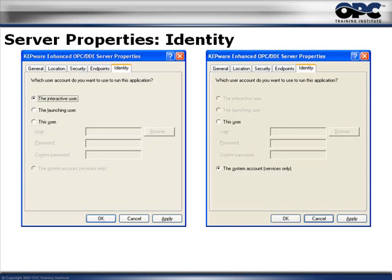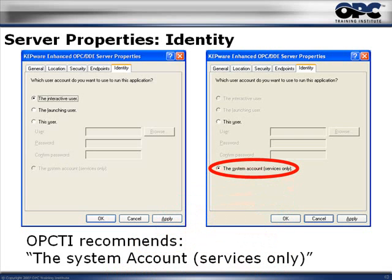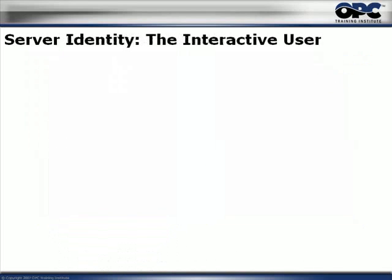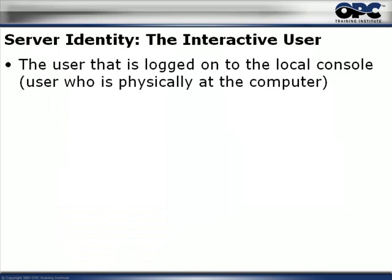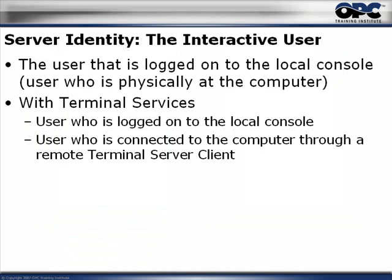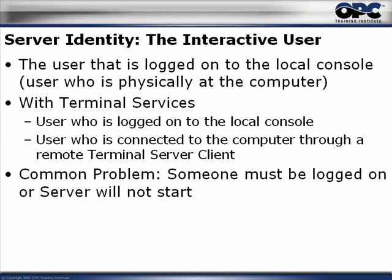We'll talk about the implications of each identity option, and remember: if you don't choose the identity properly, you're going to run into some OPC problems that can cause headaches. Let's go on to the specific identities. We'll begin with the interactive user — that's the person that's logged on to the computer at this time, physically using the keyboard. With terminal services, it's the person logged on to the local console. The problem is somebody has to be logged on, otherwise the server will not start.